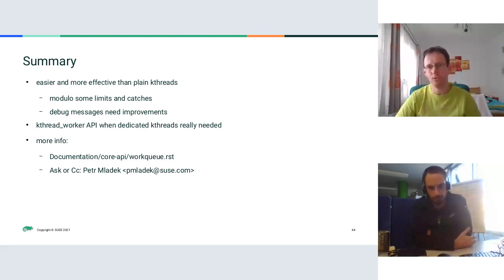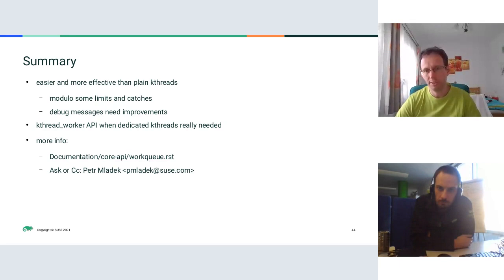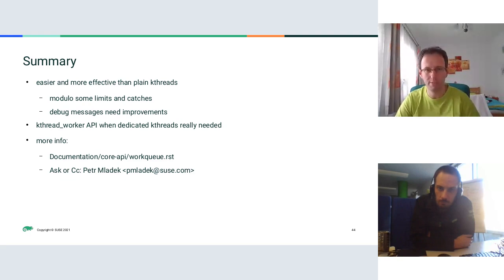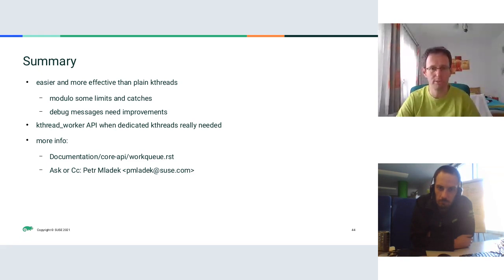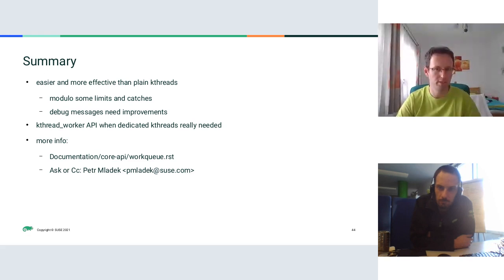In summary, workqueues are supposed to be easier and more efficient than plain kthreads. From my point of view, the debug messages need improvement, and I would like to work on that — if you have interesting bugs or debugging problems, please contact me. I suggest using the kthread worker API if you really want dedicated kthreads, and avoid plain kthreads as much as possible because it's really tricky to implement them correctly.